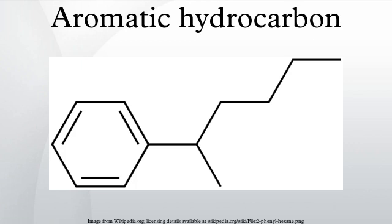The configuration of six carbon atoms in aromatic compounds is known as a benzene ring, after the simplest possible such hydrocarbon. Aromatic hydrocarbons can be monocyclic or polycyclic.